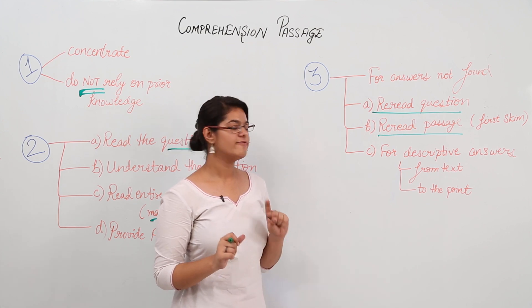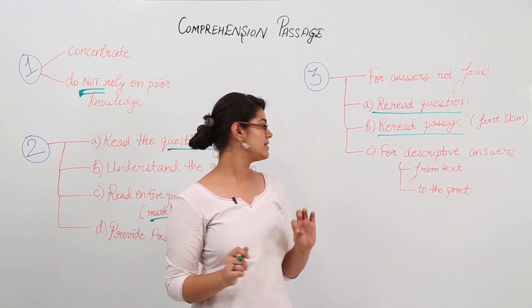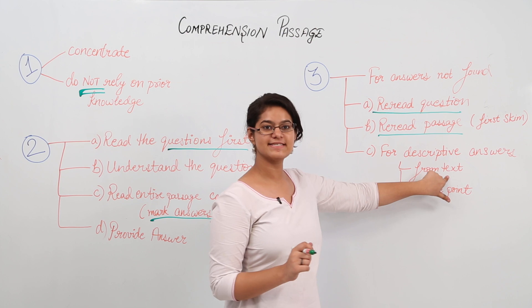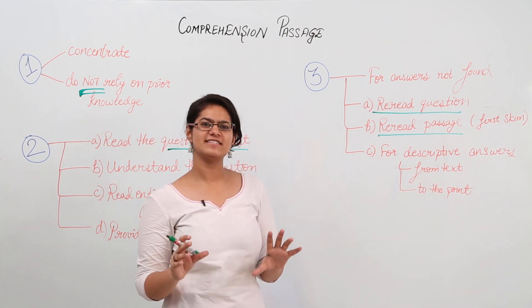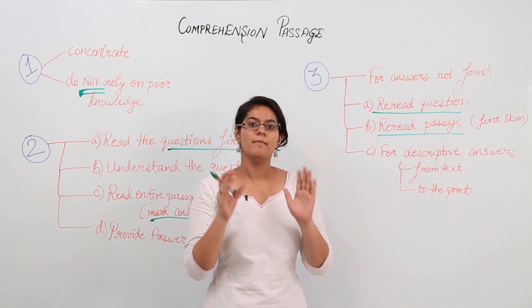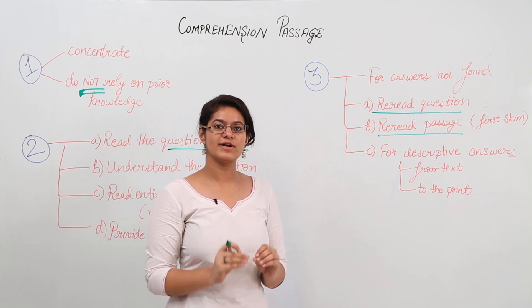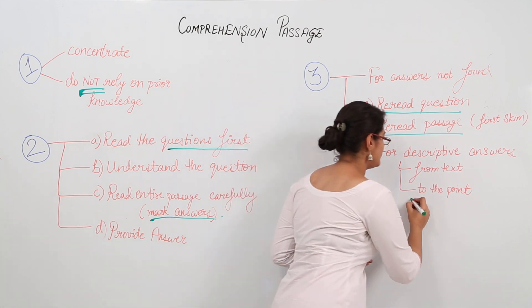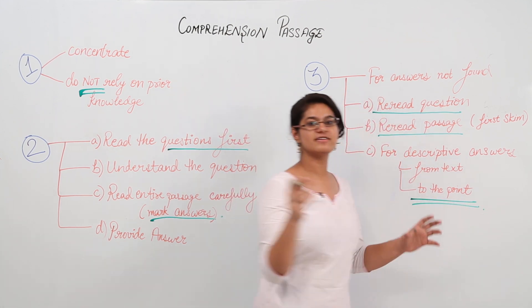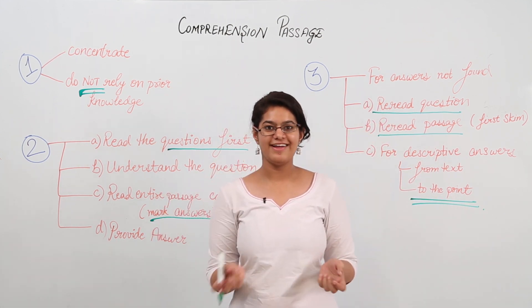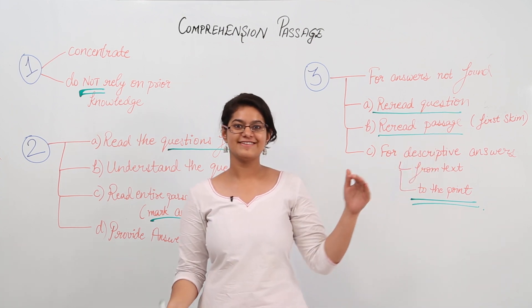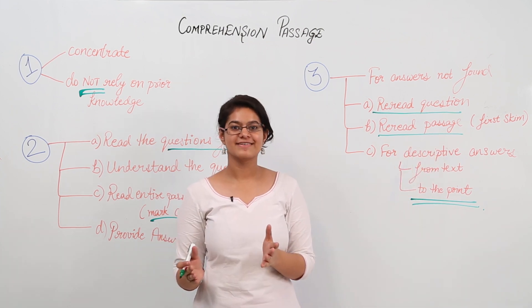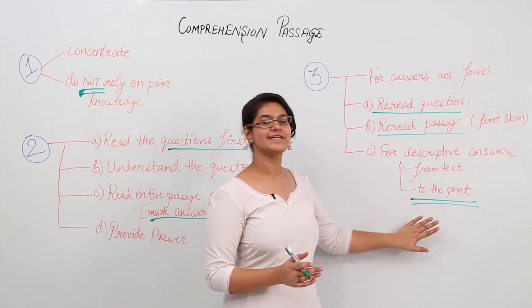Now, for descriptive answers: firstly, the answer should be in the text. It would be hidden in the text, it might be written in some other words, but only use the points mentioned in the text. Secondly, write to the point. Very important. A 30-word answer is required and you give a 100-word answer—you will get the very same marks. So write to the point; it will save you time.